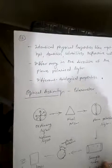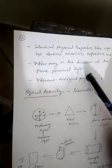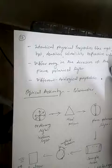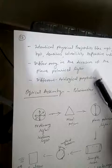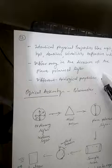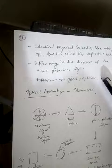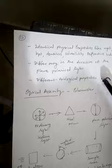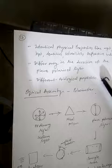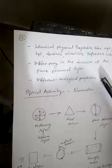Enantiomers have identical physical properties such as melting point, boiling point, densities, solubilities, and refractive indices. They differ only in the direction of rotation of plane polarized light and have different biological properties. For example, D-glucose is metabolized in our body because the enzymes present in the body have the property to metabolize D-glucose only.